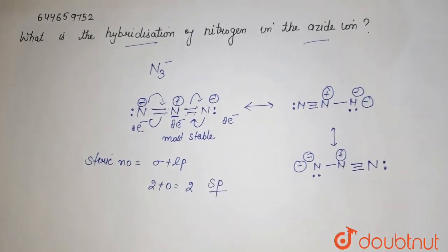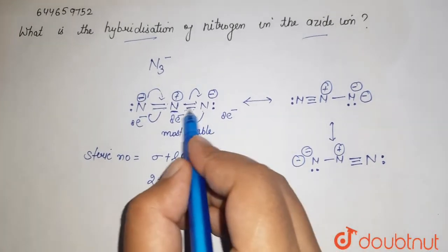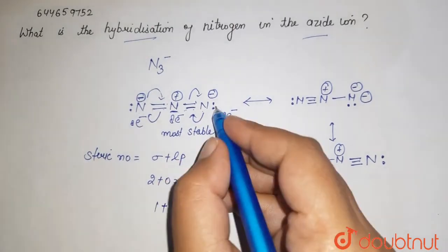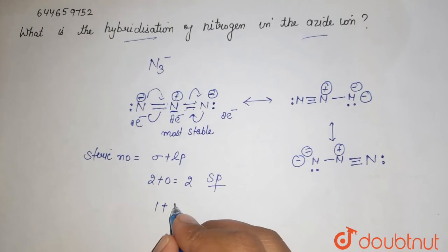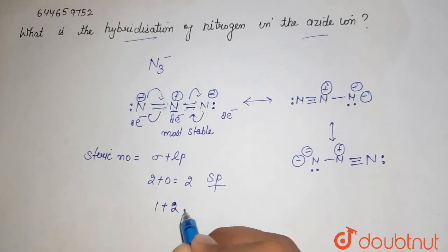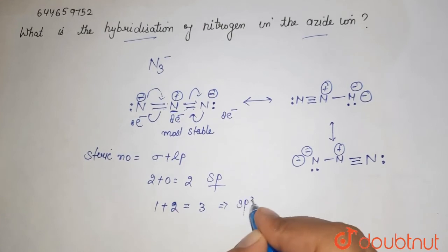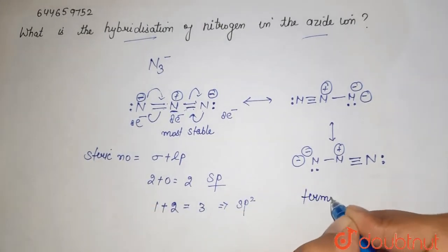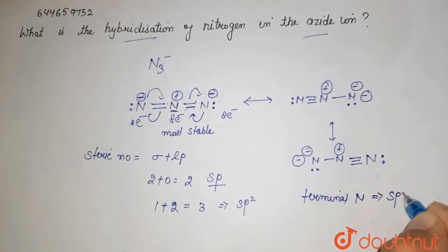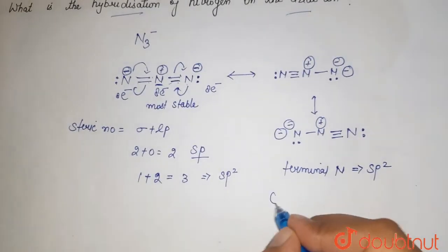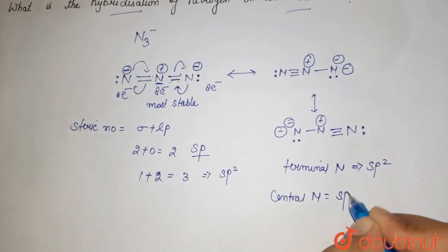For the side atom — the terminal nitrogen — it has one sigma bond and two lone pairs. The negative charge is also considered as a lone pair, so they have two lone pairs. The steric number is three, so the hybridization is sp². The same applies to the other terminal nitrogen. So the terminal nitrogens have hybridization sp², and the central nitrogen has hybridization sp.